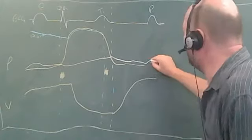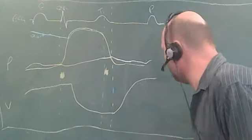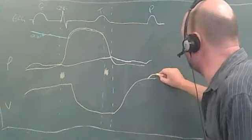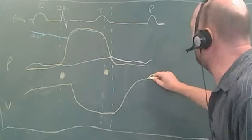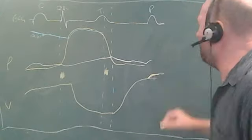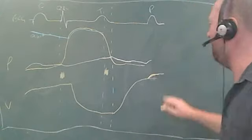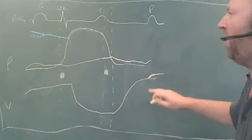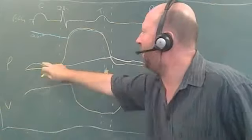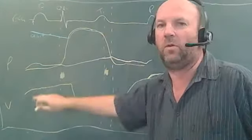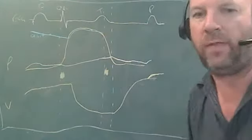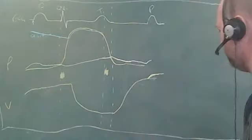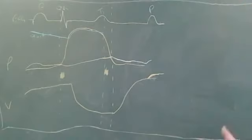The P wave of the ECG is associated with atrial contraction. Atrial pressure rises slightly, giving a small increase — the atrial kick — in ventricular volume, and we're back to where we started. That, in a nutshell, is what's going on in the cardiac cycle.